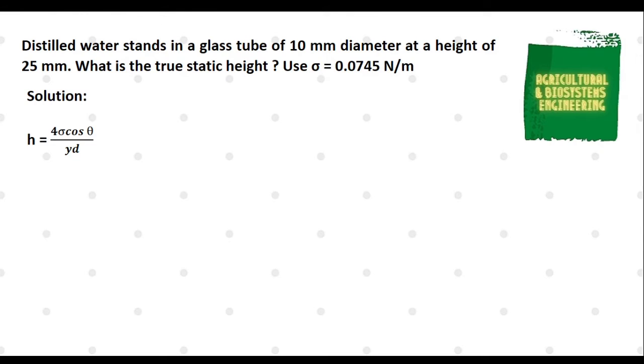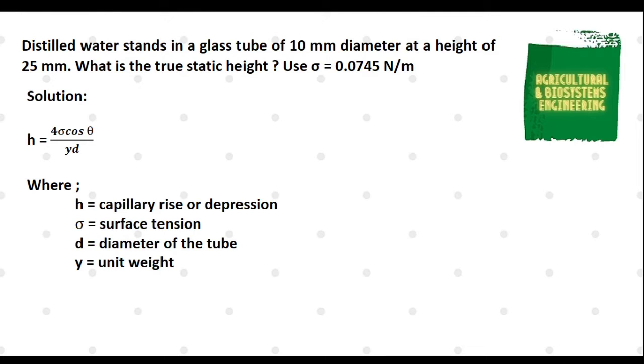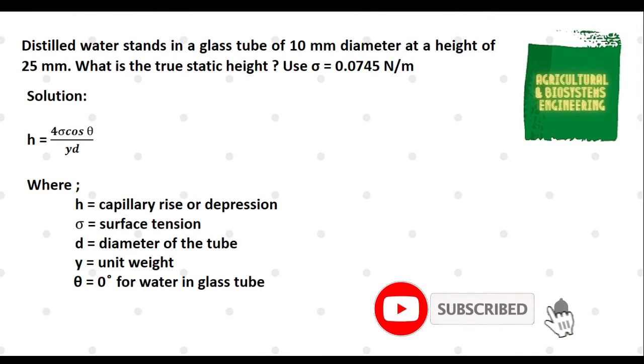Where h is the capillary rise or depression, σ stands for surface tension, d is diameter of the tube, γ stands for unit weight or specific weight, and theta which is equal to 0 degrees for water in a glass tube. You have to take note of that, especially when solving angle of water in a glass tube with respect to capillary rise or depression.